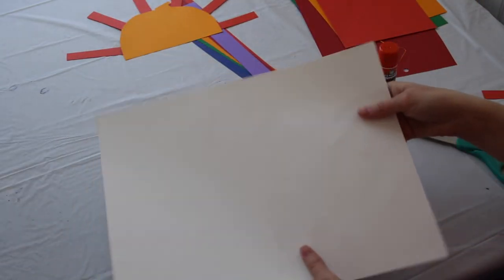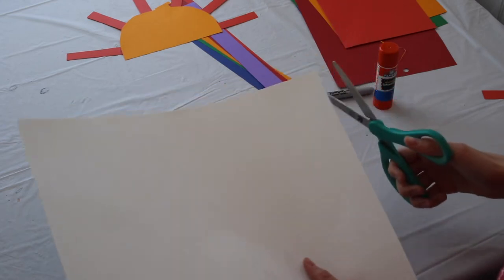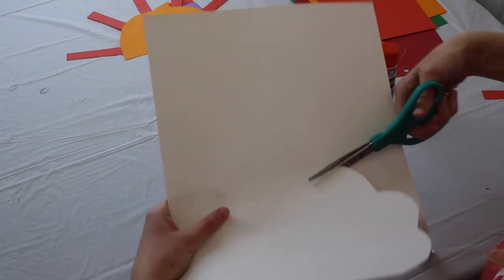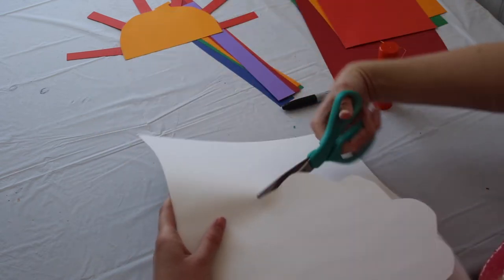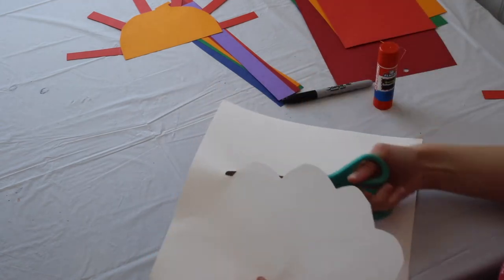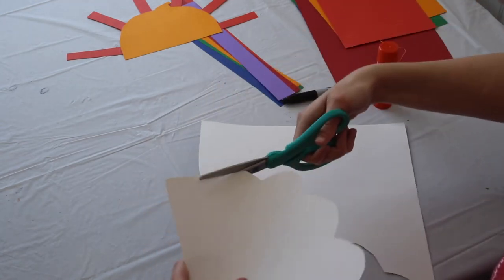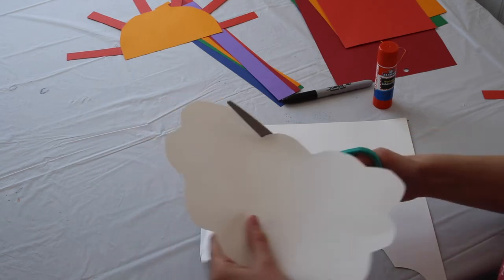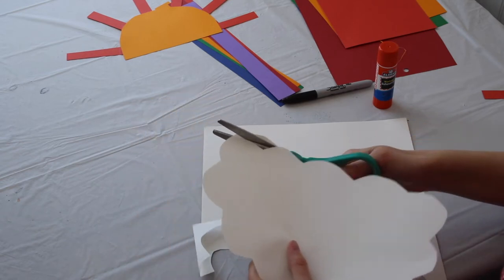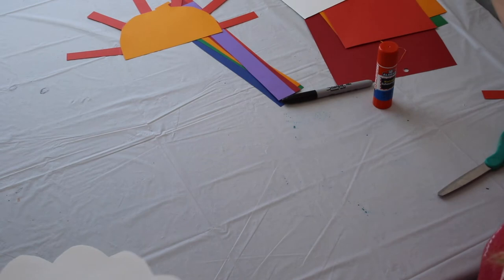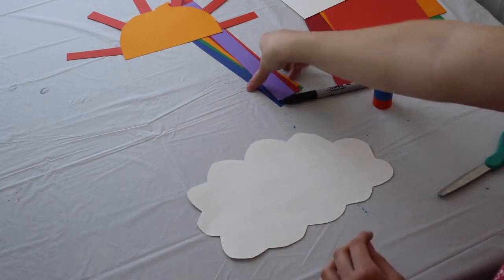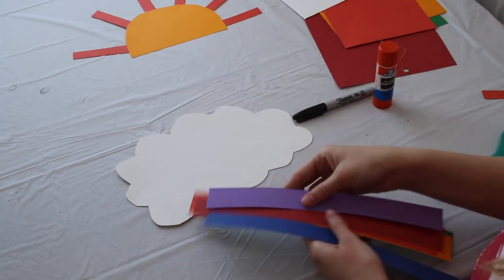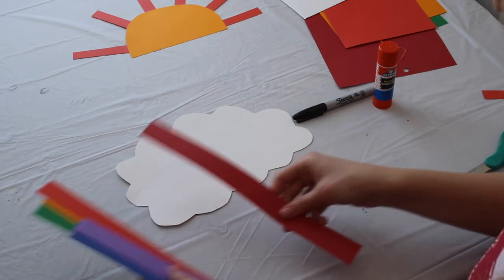Next, I'm going to take my white piece of paper and I'm going to cut out a cloud shape. So now I have my white cloud shape. And I'm going to take my rainbow pieces of paper and I'm going to glue them to the back of my cloud. And we want to make sure that they're in rainbow order. So I'm going to start with my red.